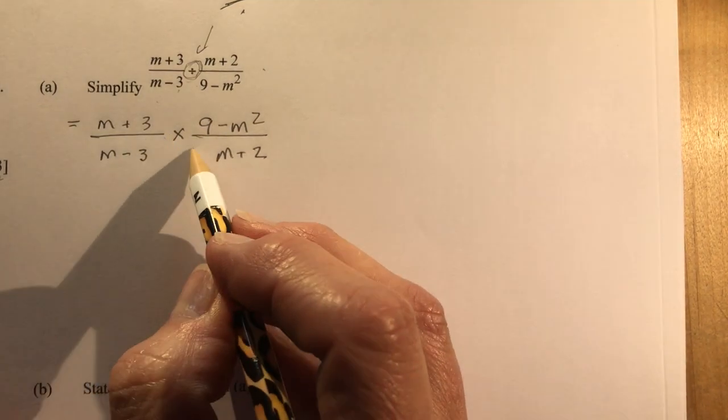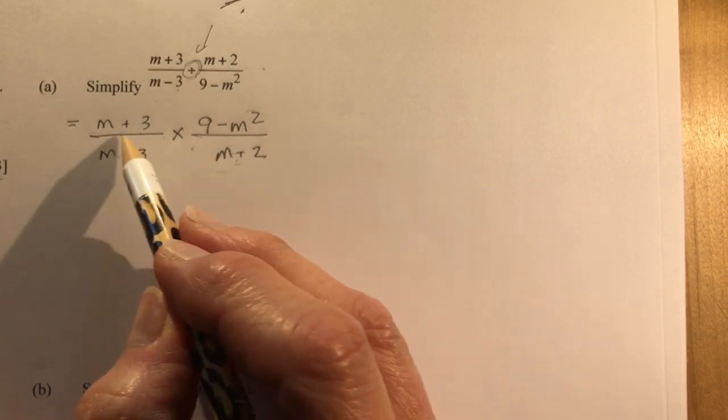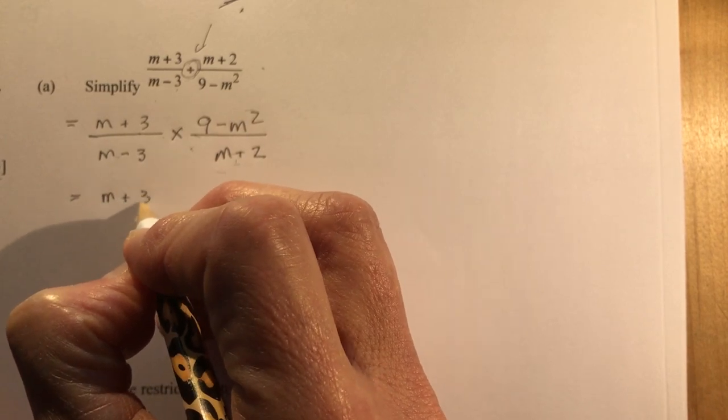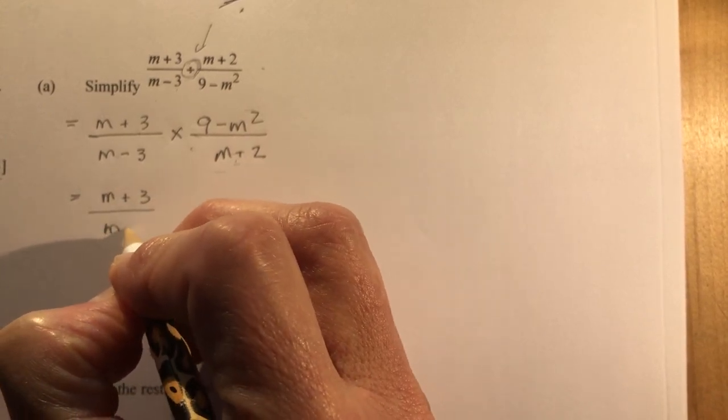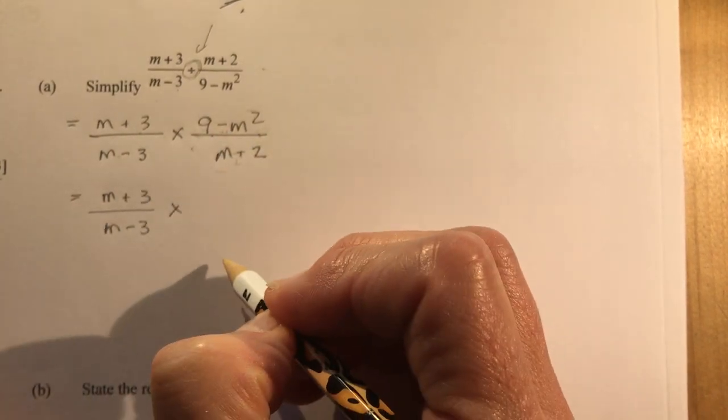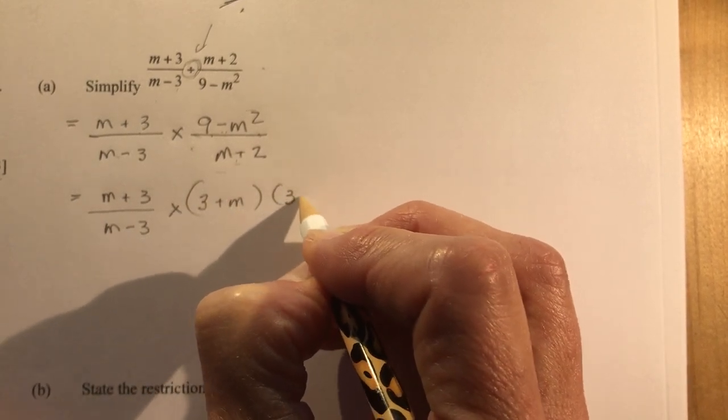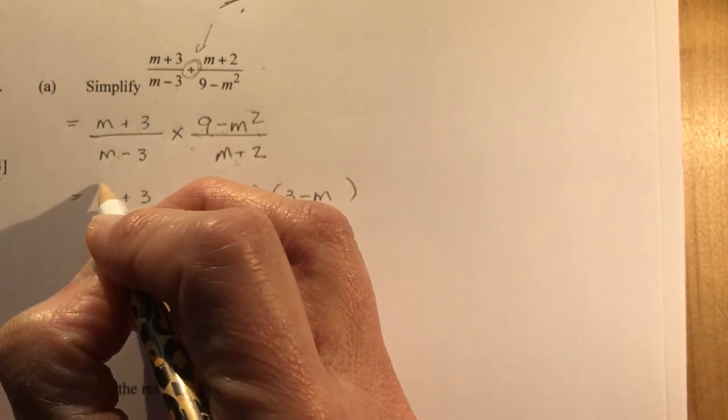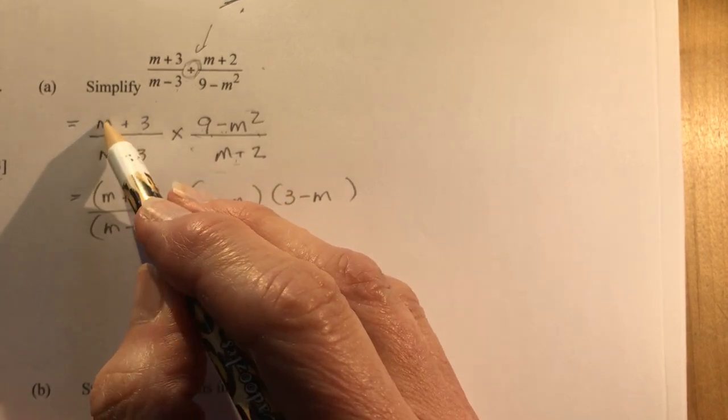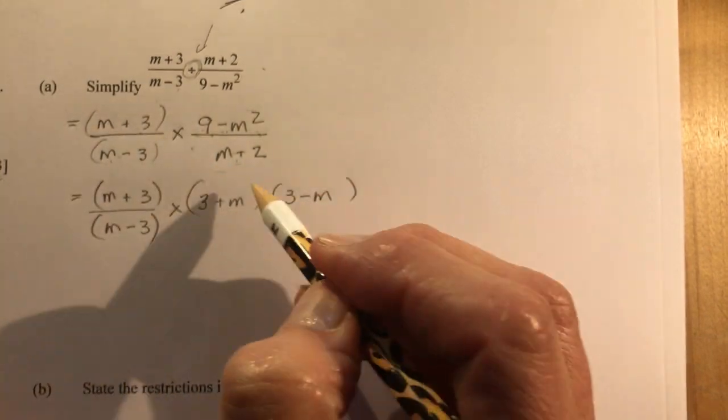When I'm multiplying, I can cancel things out top and bottom if they're the same. Right now I don't have anything that looks like I can divide, so I'm going to do some factoring. 9 minus M squared, that's a difference of squares. So that's 3 plus M times 3 minus M. It's probably a good idea to put these little binomials in brackets, because you can't divide them out individually. They have to go with little families here.